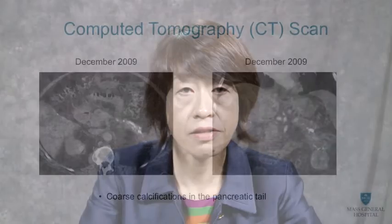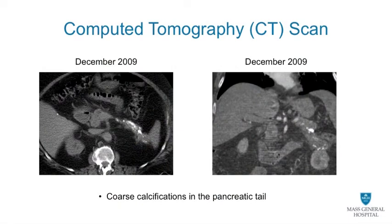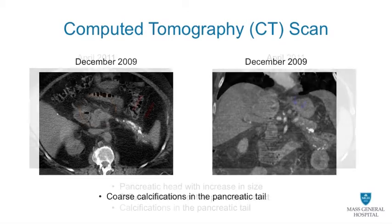There is no significant family history, including pancreatic cancer. The imaging study performed in December 2009 shows coarse calcifications in the pancreatic tail that may be a sequela of prior pancreatitis, without other significant findings.